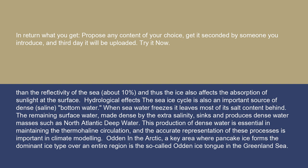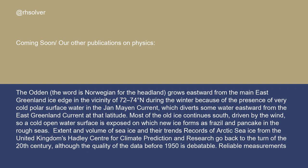A key area where pancake ice forms the dominant ice type over an entire region is the so-called Odden Ice Tongue in the Greenland Sea. The Odden — the word is Norwegian for 'the headland' — grows eastward from the main East Greenland ice edge, in the vicinity of 72–74 degrees, during winter, because of the presence of very cold polar surface water in the Jan Mayen current, which diverts some water eastward from the East Greenland current at that latitude.